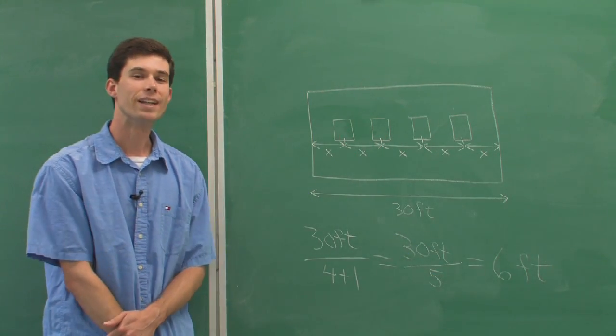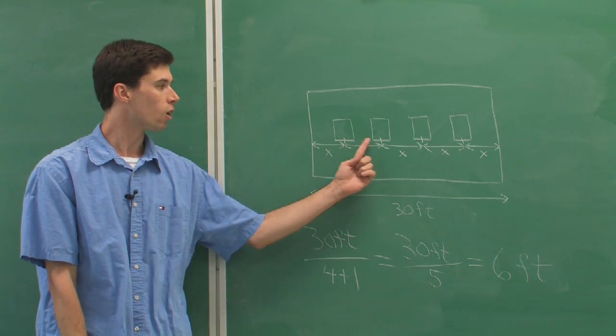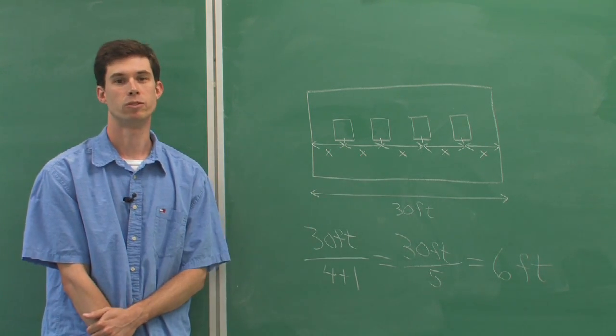Thus, we end up with six feet where we need to center our windows at six feet intervals along the wall.